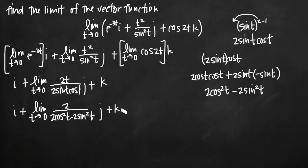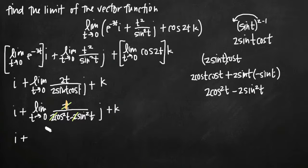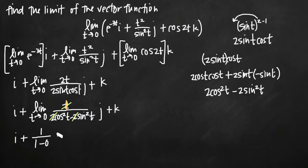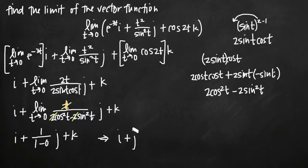Plugging back in, we have 2 over (2 cosine squared t minus 2 sine squared t), multiplied by j, plus k. The 2s cancel, leaving 1 over (cosine squared t minus sine squared t). Now evaluating the limit as t goes to zero: cosine of zero is 1, so cosine squared of zero is 1; sine of zero is 0, so sine squared of zero is 0. The denominator is 1 minus 0, which is 1. So we get 1 over 1, which is just 1. Our final answer is i plus j plus k.